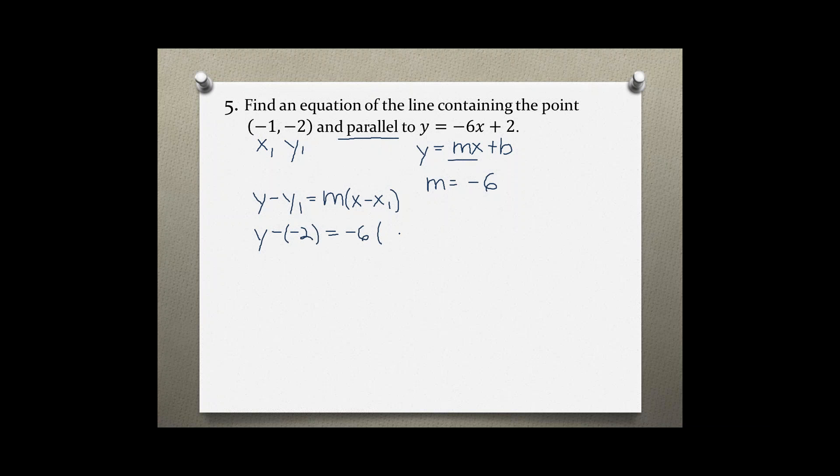I have to simplify and solve for y. So negative times negative is positive, y + 2 = -6(x + 1). Distributing the -6, I get y + 2 = -6x - 6.